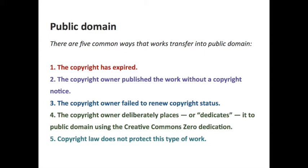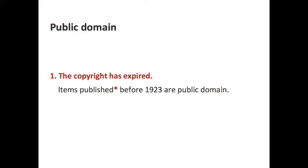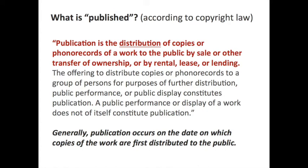Way number one: an item is in the public domain if copyright has expired. Items published before 1923 are considered in the public domain. What does 'published' mean? Here is the legal definition: 'publication is the distribution of copies or phonorecords of a work to the public by sale or other transfer of ownership or by rental, lease, or lending.' Boiled down, publication occurs on the date on which copies of the work are first distributed to the public.